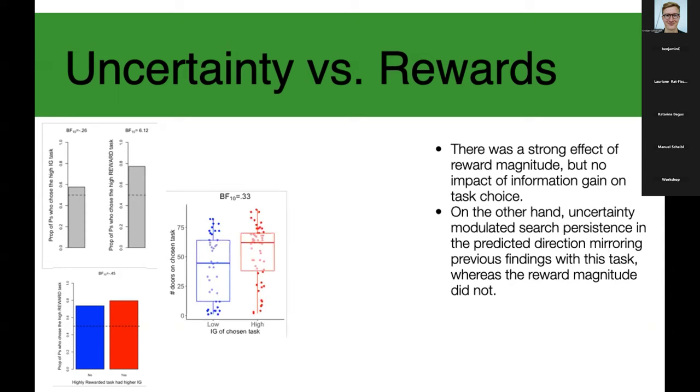But what is interesting is that once they enter the game, what is really modulating their persistency, so how long they're actually willing to search, is not the reward anymore, but is the uncertainty, as we have shown in the other studies I presented today. So if you look at the information search of the chosen task, this is the number of doors they actually go through. And we see the effect that is very similar and comparable to the magnitude of the effects we have found in the previous studies. But if we plot it by reward of the chosen task, we find zero difference.